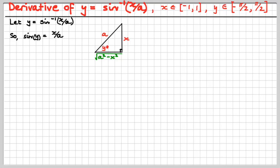Armed with that information, we can say that sine of y, looking at that diagram, equals x over a. Yes, we certainly can. Furthermore, x is equal to a sine y. Now we're going to do our little dx/dy trick, like we did in the previous video on derivatives of functions where you've got x as a function of y.